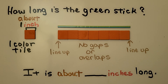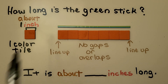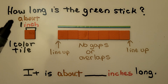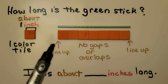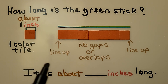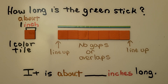Here we have a green stick — it's kind of green and blue, really. How long is this green stick? Each color tile is about one inch. We line the color tile up with the edge of the stick and put color tiles side by side next to each other with no gaps, no overlaps, no spaces between them.